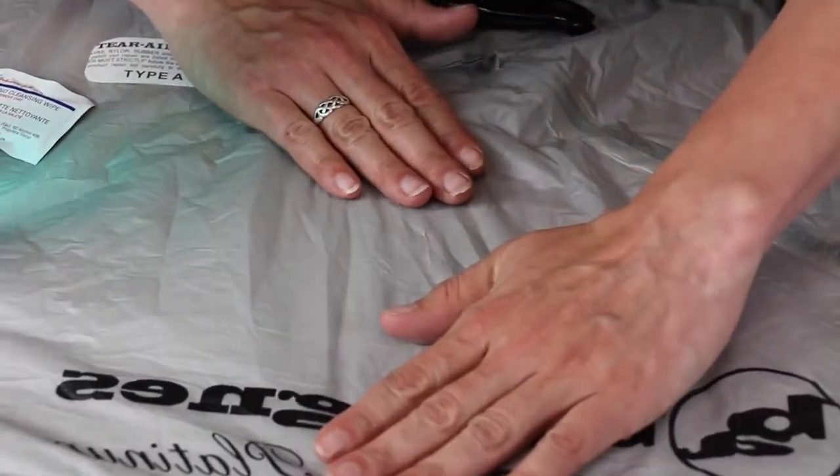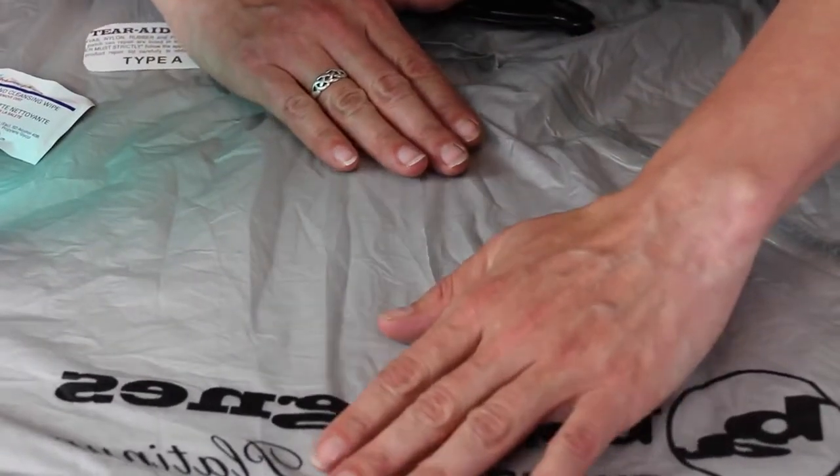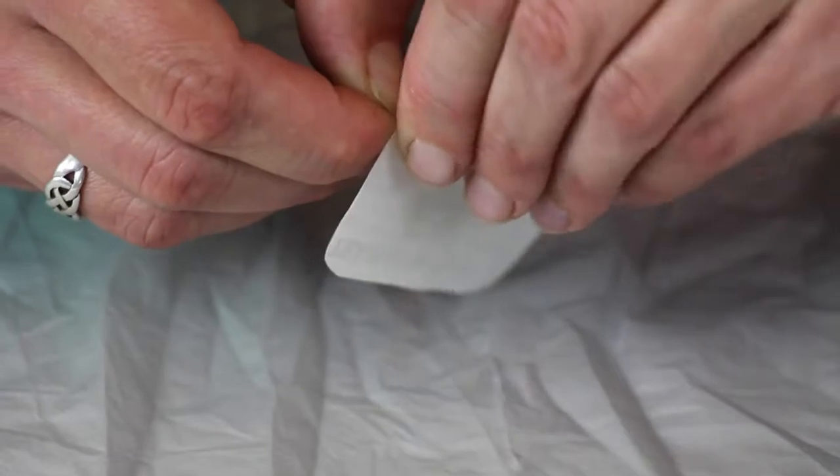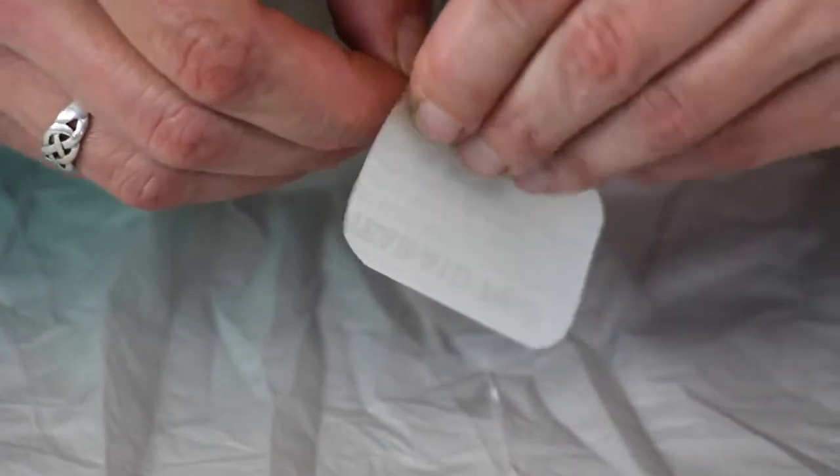Find a flat surface and try to position the edges as close together as possible. The first line of repair is patching the inside of the tent.